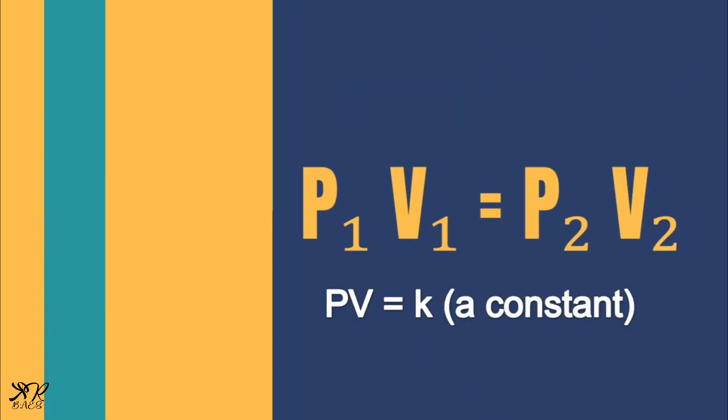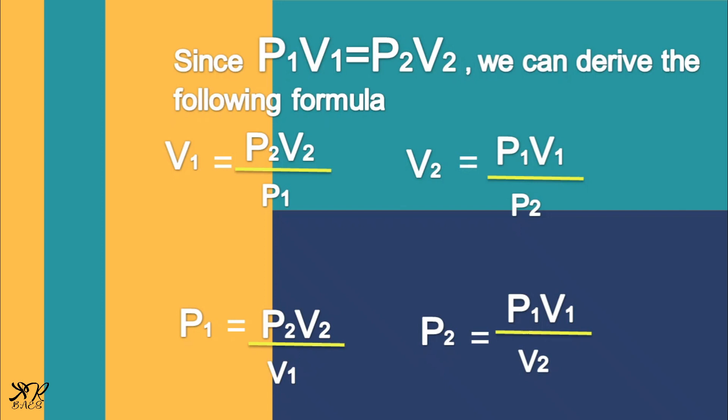For a given sample of gas under two different conditions at a constant temperature, the product of pressure and volume is constant. Thus, it can be written as P1 times V1 is equal to P2 times V2. Since P1 times V1 is equal to P2 times V2, we can derive formulas. In getting the initial volume, we have V1 is equal to P2 times V2 all over P1. In getting the final volume, we have V2 is equal to P1 times V1 all over P2.